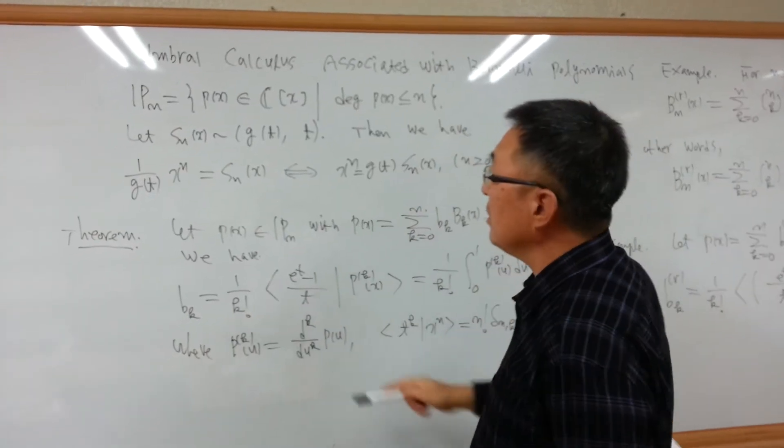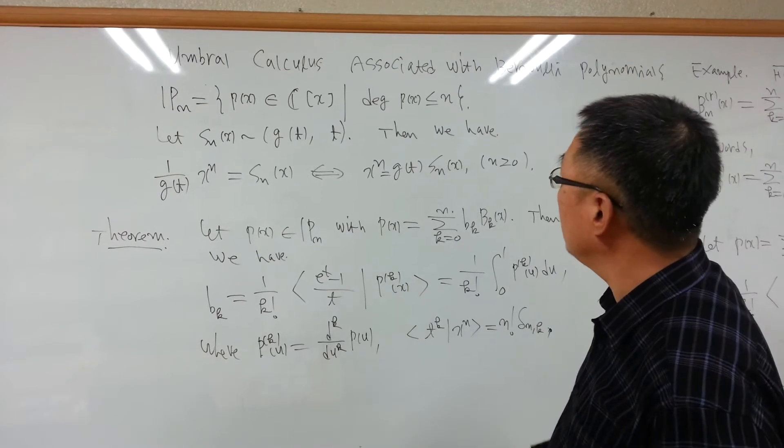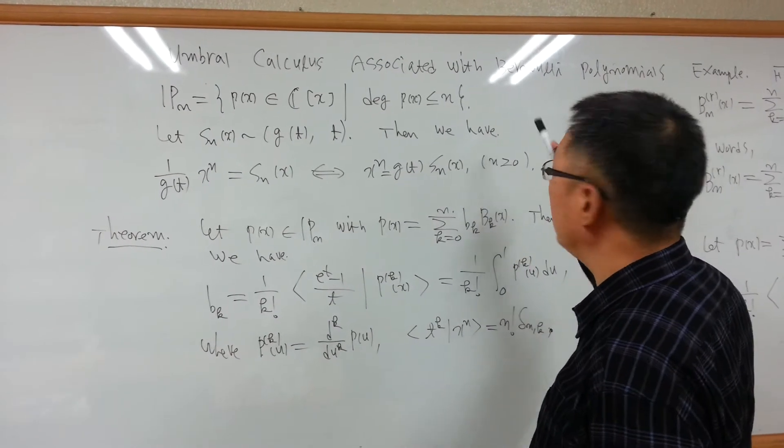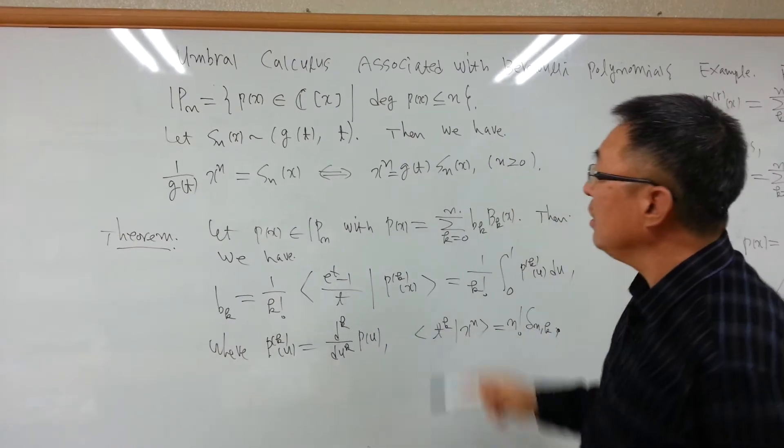I am associated with Bernoulli polynomials. In this paper, we investigate some interesting identities of Bernoulli polynomials and the numbers which are derived from umbral calculus.